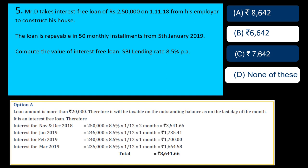From January onwards, the outstanding changes as repayments begin. The loan is paid in 15 installments — 2,50,000 divided by 50... actually Rs. 5,000 per installment. So January end outstanding is Rs. 2,45,000, February is Rs. 2,40,000, March is Rs. 2,35,000. Calculating one month's interest for each, the total interest works out to Rs. 8,641. Rounding off, that gives Rs. 8,642. So the answer is option A — Rs. 8,642. Remember, interest-free or concessional loan from employer is taxable.